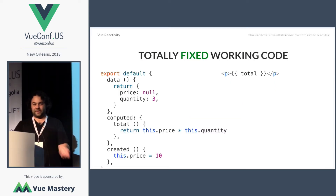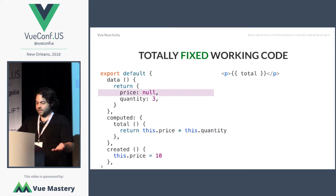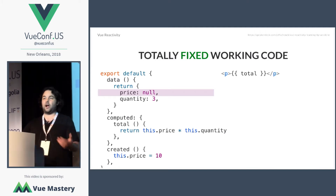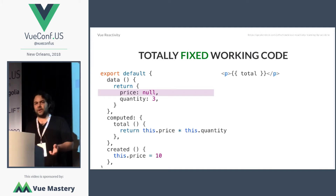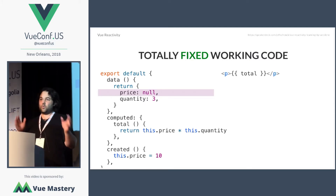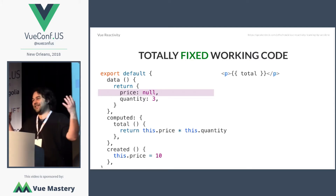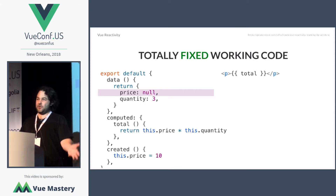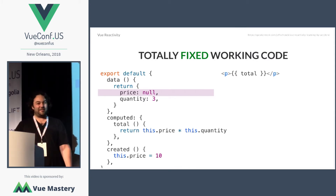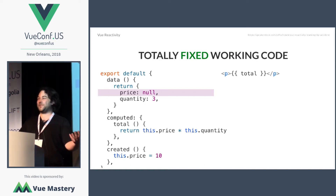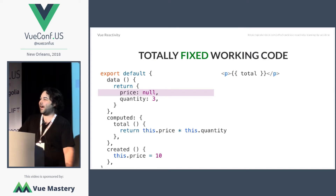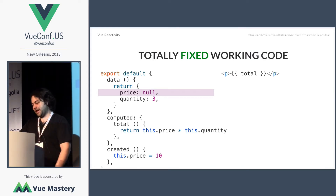How do we fix this? We have to include price in the initial data object. Most of us have probably run into this. What was helpful for me is thinking: okay, I'm annoyed in this moment, but thank you, Vue, for actually building dependency trees for me. Now I know that, and it makes my life better every day — both knowing it and having it. So let's focus on the positive.